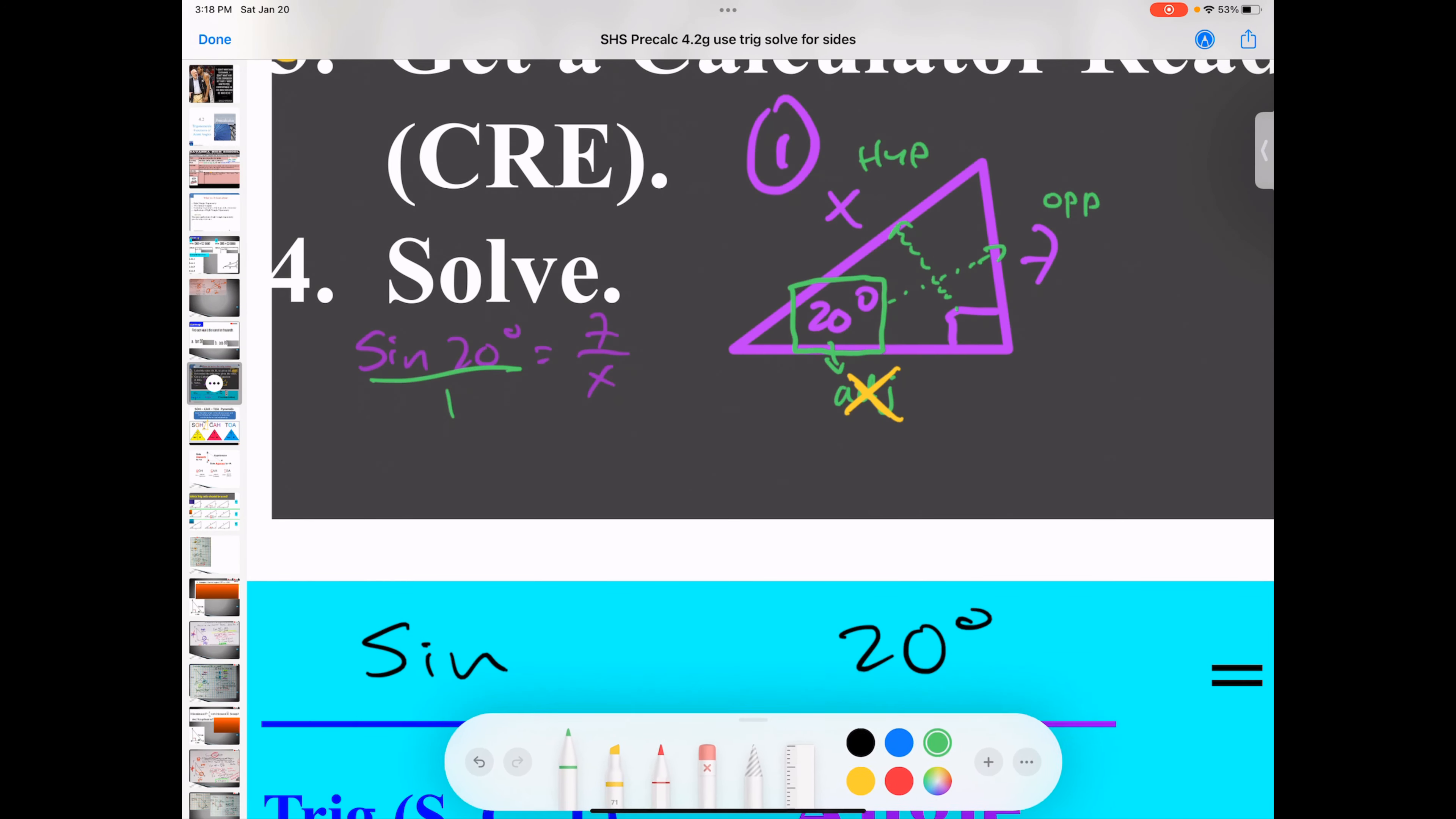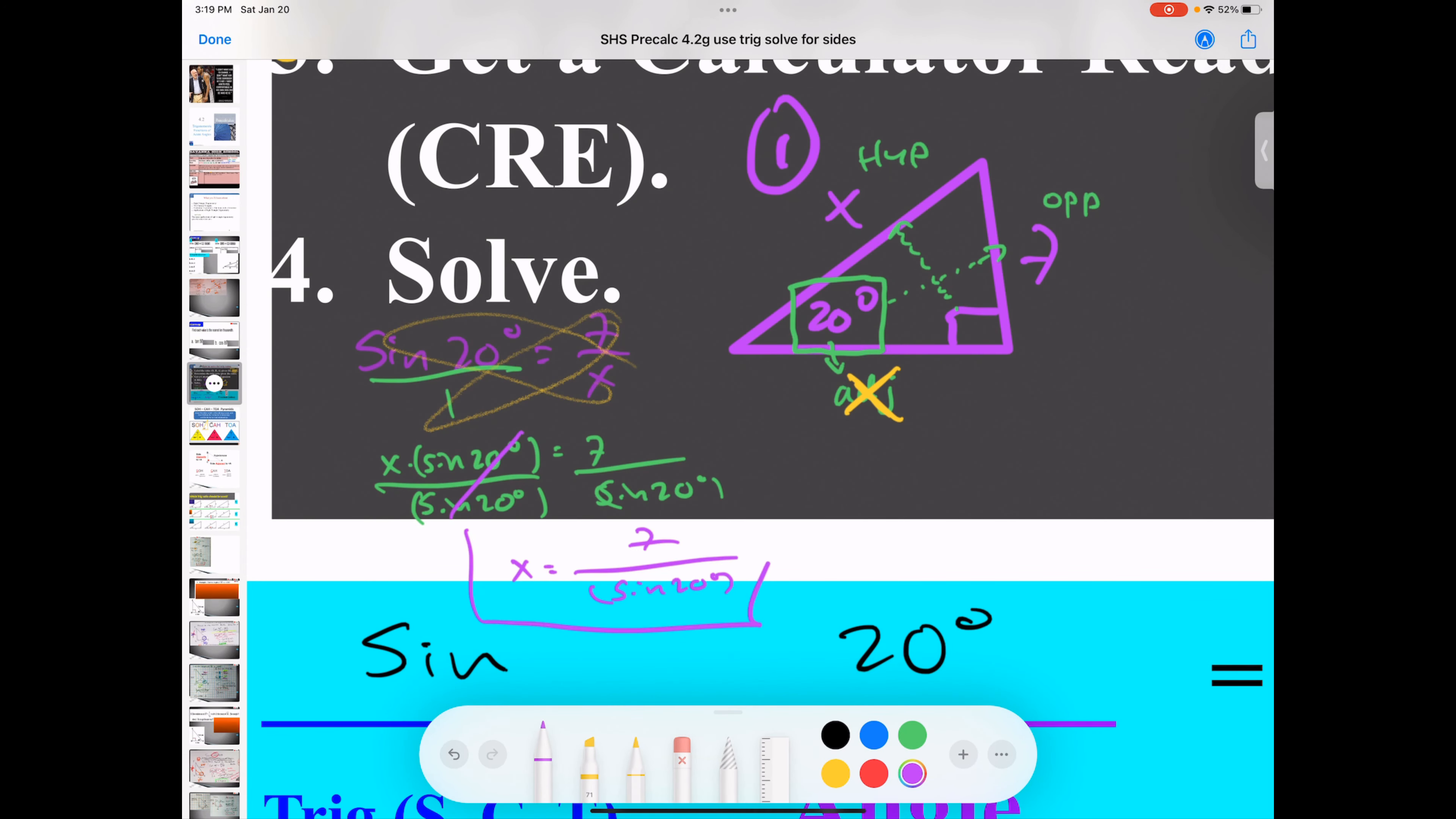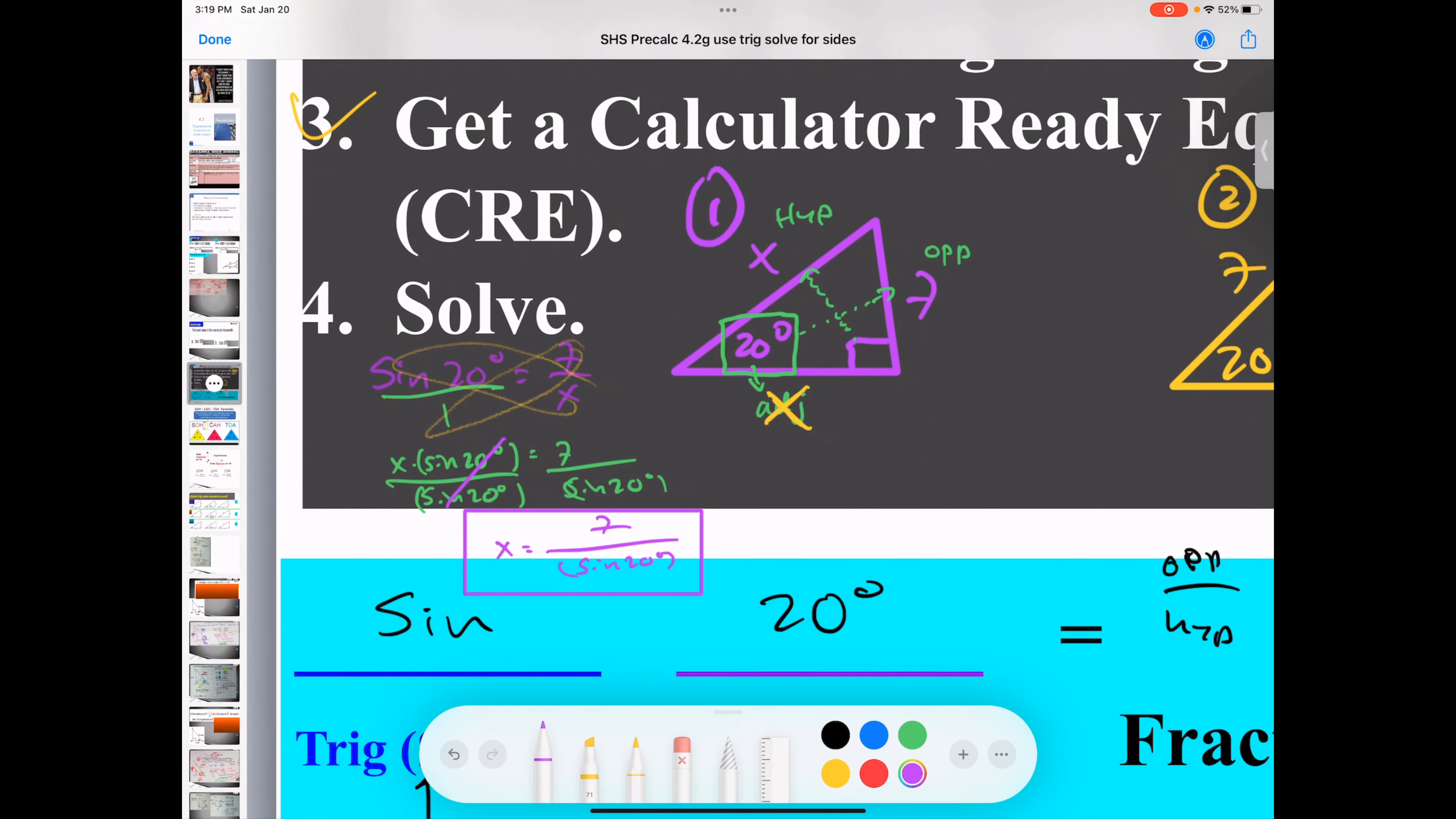I'm going to make this a fraction. I'm going to cross-multiply X times sine of 20 degrees. If you want to keep that in parentheses, then you know it's one unit. And then divide both sides by sine of 20. My calculator ready equation is 7 over sine of 20. You can put that in your calculator and figure that out.